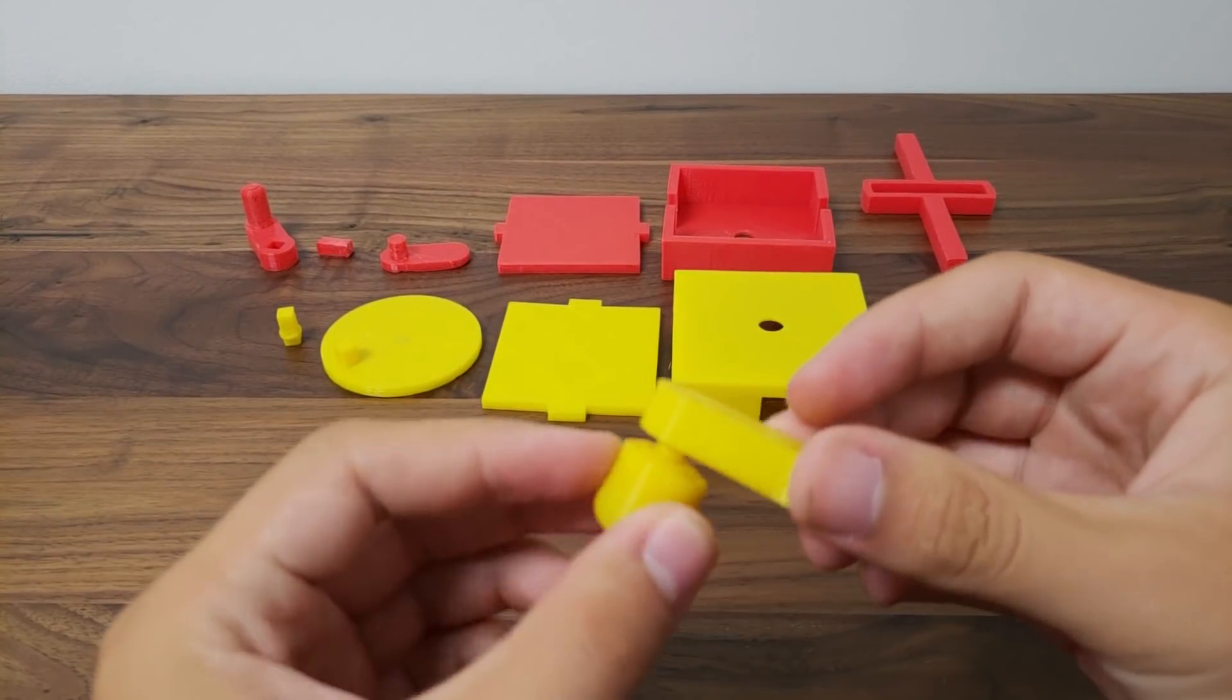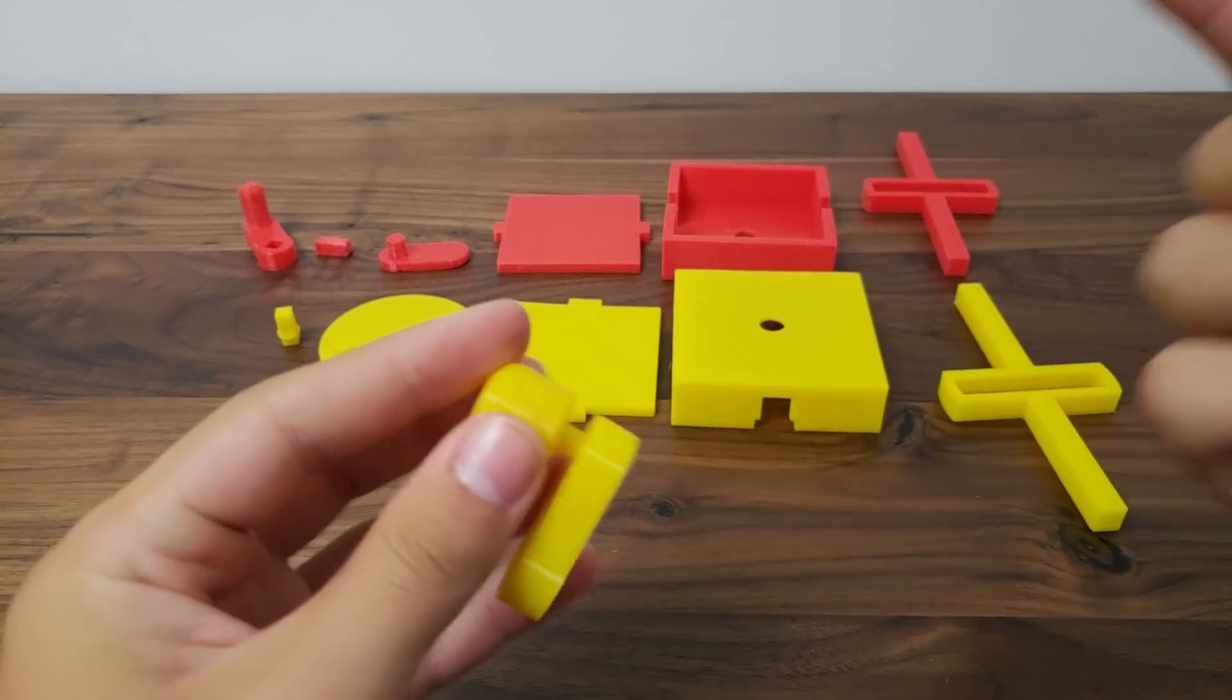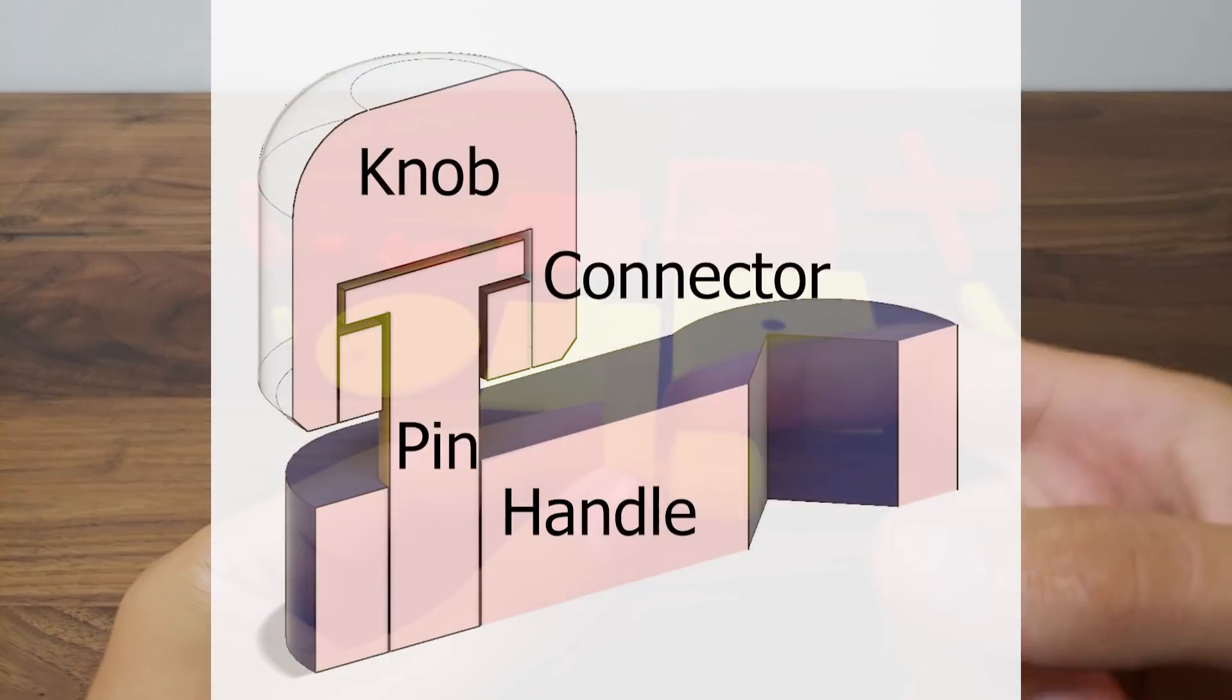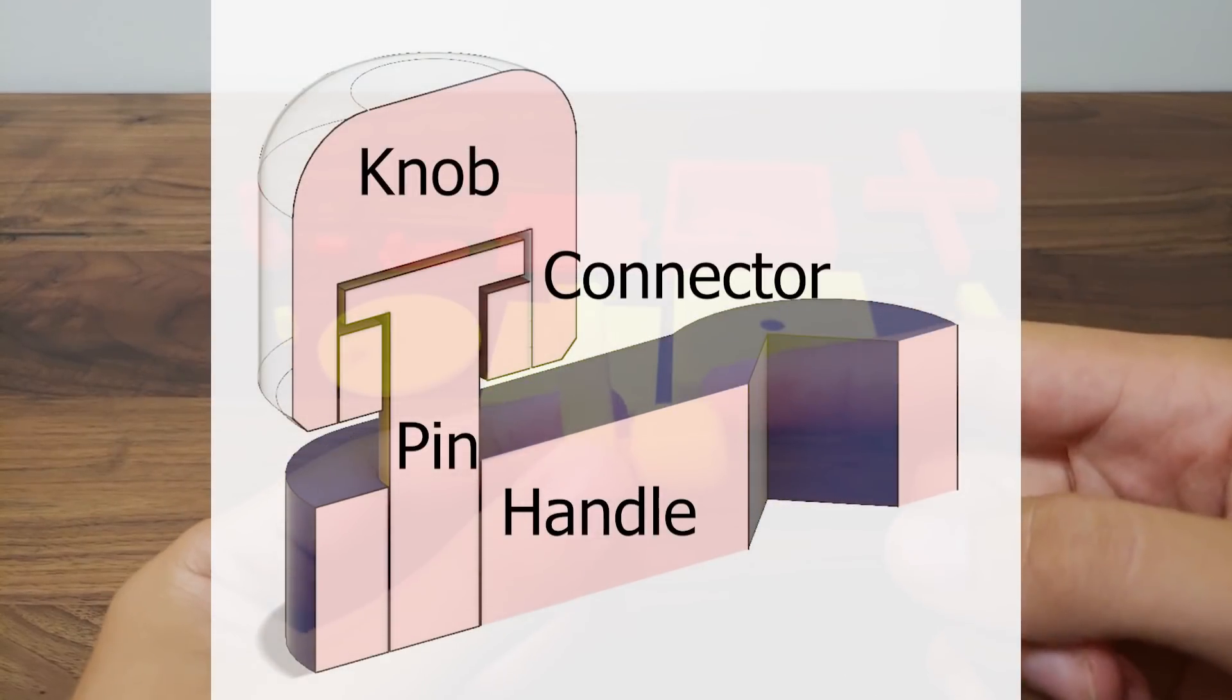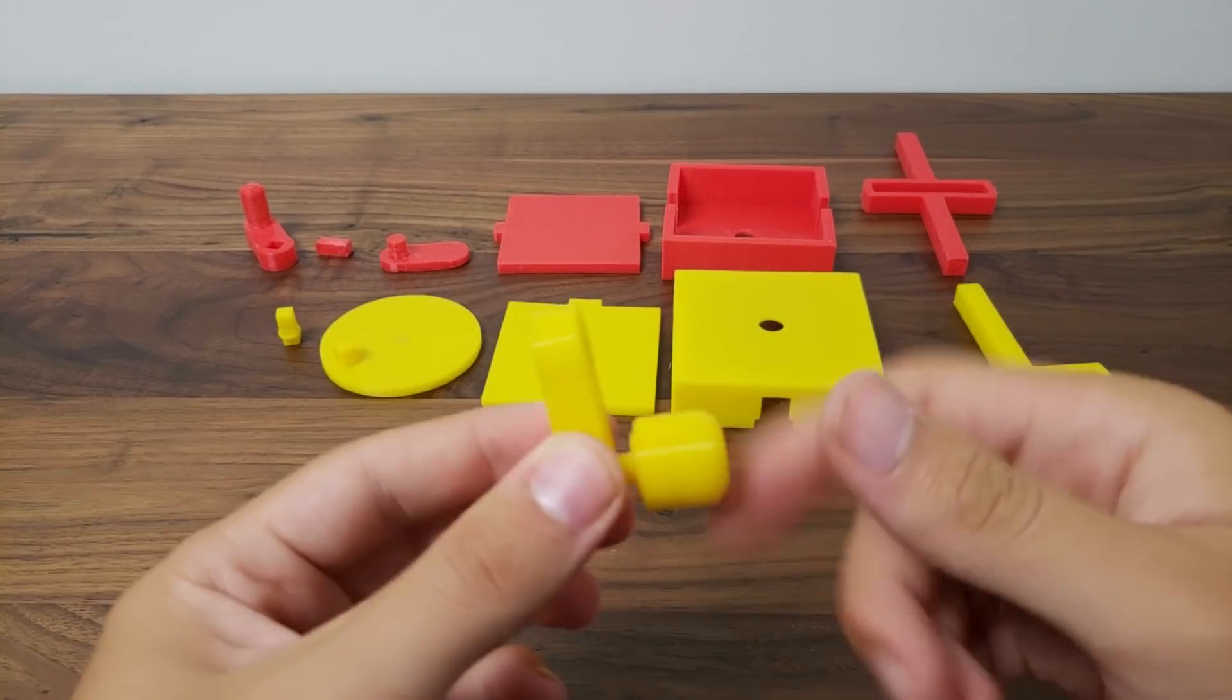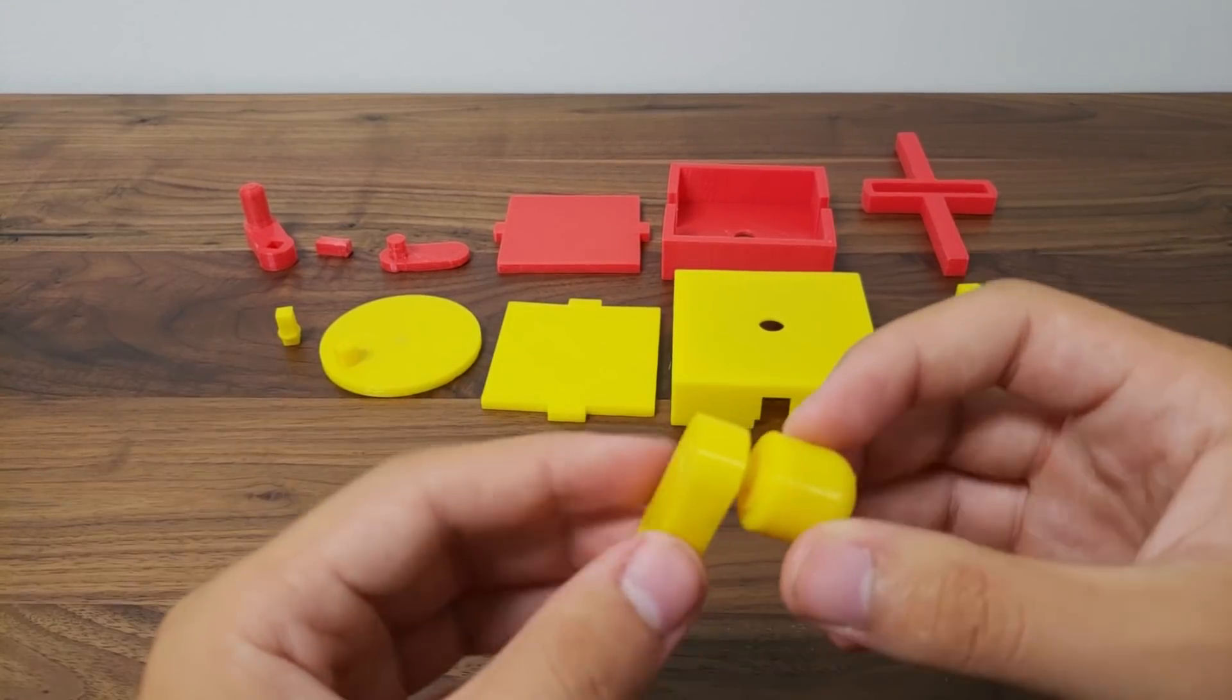For version 2, I made a spinning mechanism to use, and I'll show a render of this with some of the stuff labeled. Basically, there's a pin, a connector piece, and then a knob, and this allows you to spin. When you're running the machine, it makes it such a better experience.